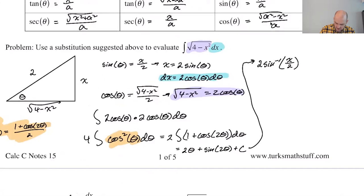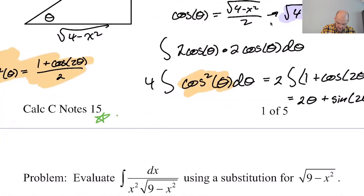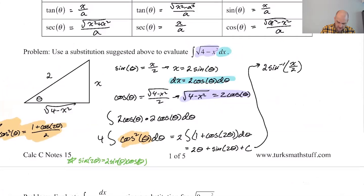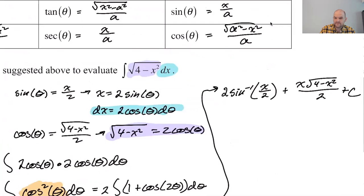And then sine of two theta. So you got to remember everything to do these problems, which is why I like them. But I don't always like the same things as other people. So I'm going to call two sine theta cosine theta. That's sine of two theta. So I'm going to replace two sine of two theta with two times the sine of theta, which is this, the cosine of theta, which is this over this. So that's going to give me, that gives me two times x over two times this over two. So I think it's going to be plus x root four minus x squared over two plus C. So I think that this is our final answer.